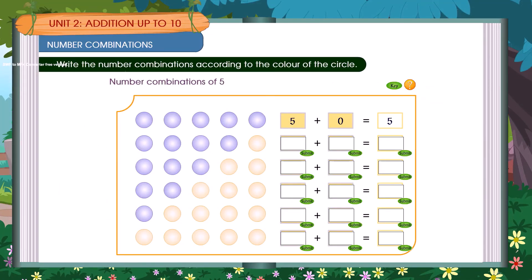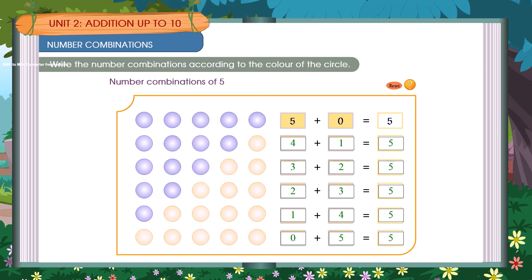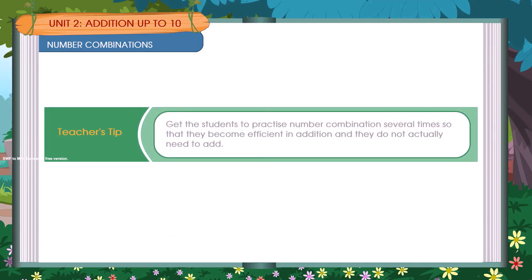Write the number combinations according to the color of the circles. Number combinations of 5. Get the students to practice number combinations.